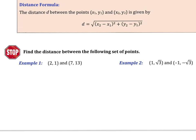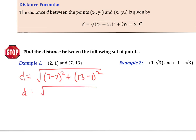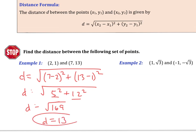Now that you've started the video again, let's check how you did. On the first one, you should have ended up with the square root of (7 minus 2) squared plus (13 minus 1) squared, giving 5 squared plus 12 squared, which is the square root of 169, or d equals 13.